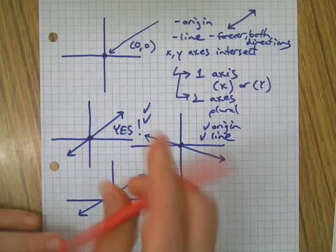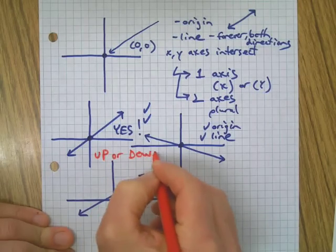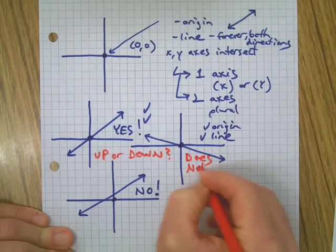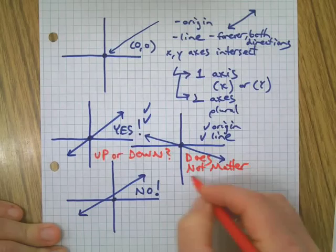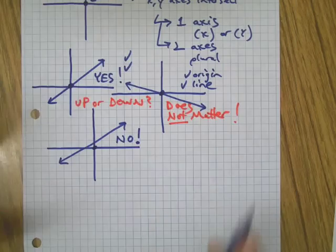One other thing up here: direction does not matter. Up or down, does that matter? Does not matter. Okay, some people think when it goes down from left to right that changes things. It doesn't. It's still a line, it still goes through the origin. Let's do a couple more examples here.